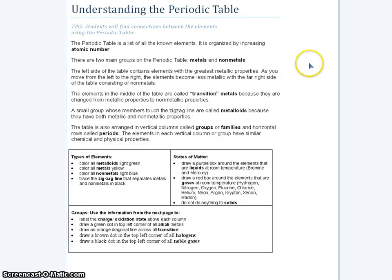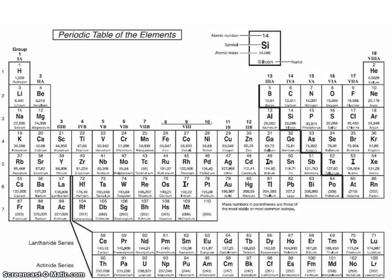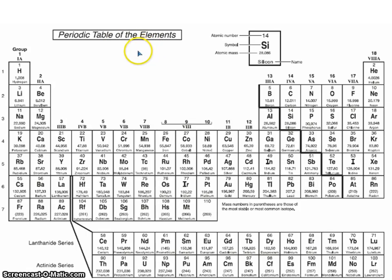The periodic table. You get a copy of the periodic table in your test. Here it is — a periodic table of the elements. They're all elements, every single one of them. If it's not on this list, it's not an element. You won't find water — it's not there. Water is not an element; it's a compound of hydrogen and oxygen. It's a compound, not an element.